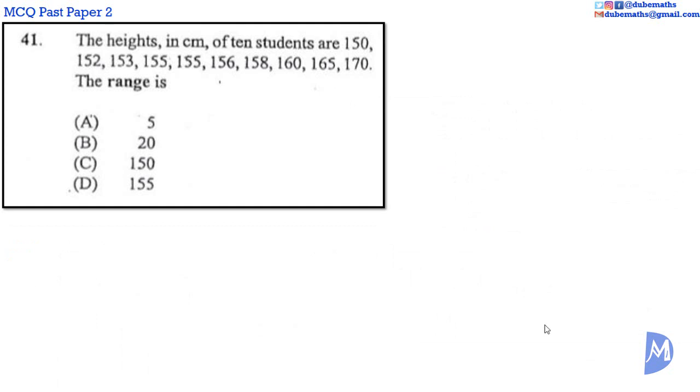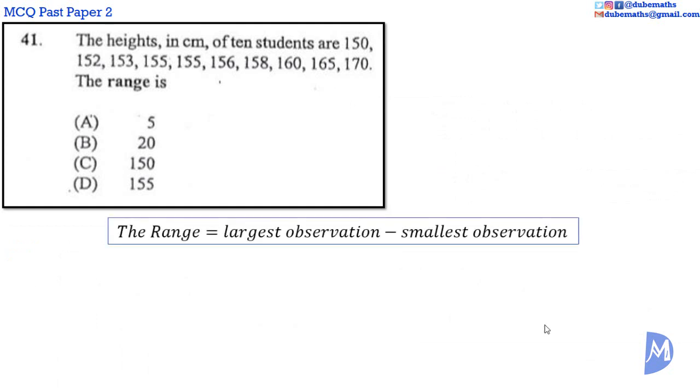Question 41. The range is the difference between the largest and the smallest observation. The observations are arranged in ascending order in this question. The largest is 170 and the smallest is 150.